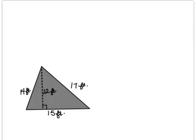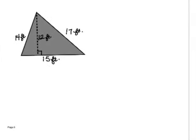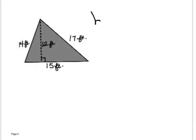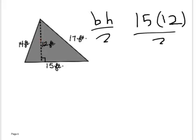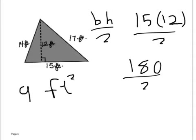So what would be my base? What would go here for my base? 15. What will go for my height? It's 12. Okay, anytime you're doing measurements, always look for the right angle for parallelograms. Look for the right angle so the height and the base will be touching it. All right, so 15 is for my base, 12 is for my height. We're going to divide that by two. 15 times 12 is 180. 180 divided by two is 90, right? Do you agree? So it's 90 feet squared.